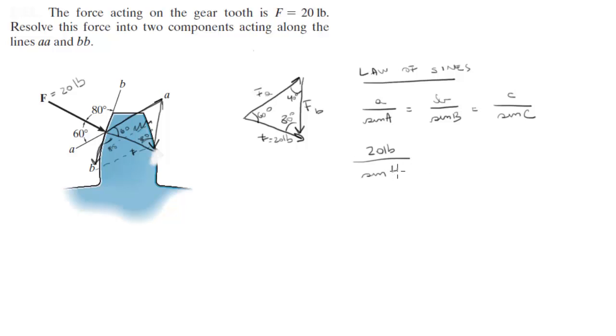So sine of 40 degrees is equal to the B component over sine of 60, is equal to the A component over sine of 80. And all you got to do is just pick this side of the equation, solve for B, and then pick this side of the equation, solve for A.